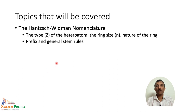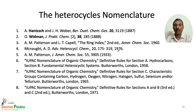The topics covered in this session include the Hans Widmann nomenclature. We will study elaborately how heterocyclic compounds are named. We will look at the type of the heteroatom, the ring size, and the nature of the ring. These are the three important parameters based on which heterocycles are named.